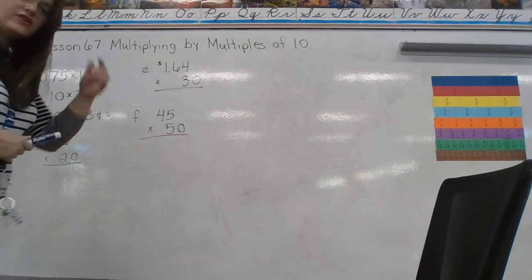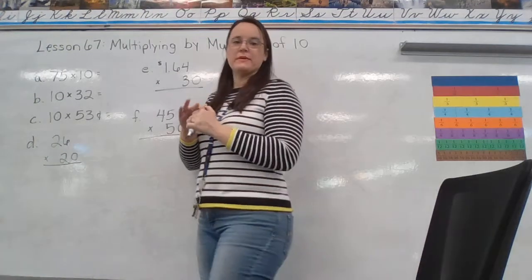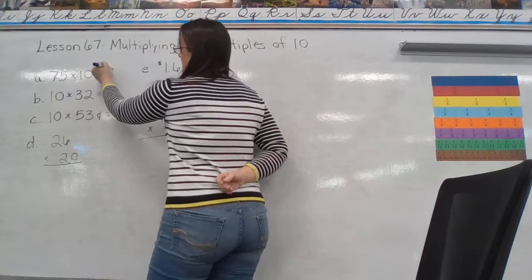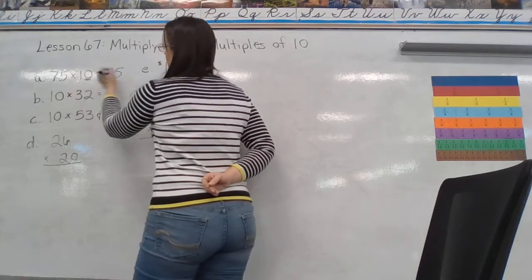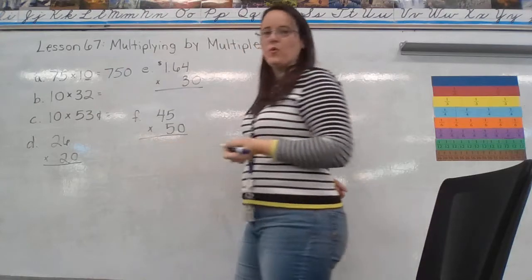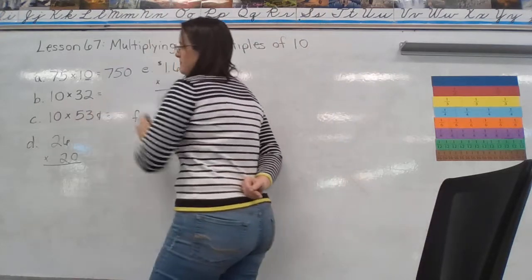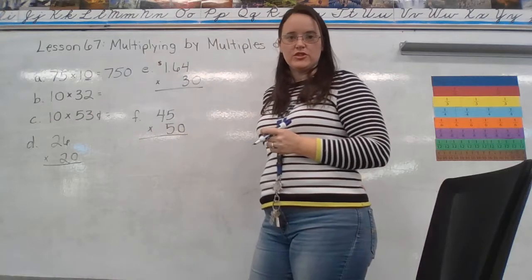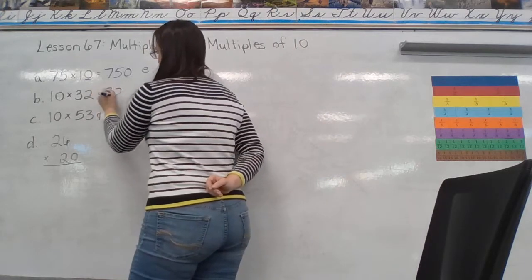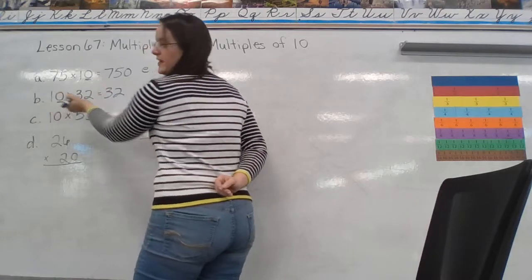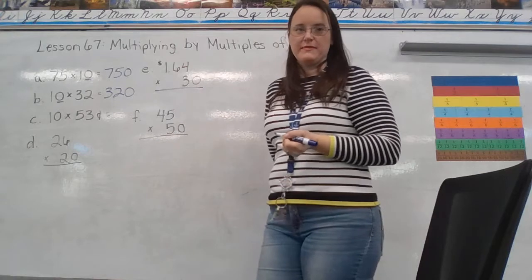Okay. So, for A here, we have 75 times 10. Remember the trick. 75 times 1 gives me 75. And then I have 1, 0 here. So, I'm going to tack on 1, 0 in my answer. Same thing with B. 10 times 32. 1 times 32 gives me 32. I have 1, 0 here. So, I'm going to tack on 1, 0 in my answer.